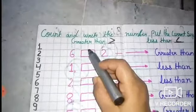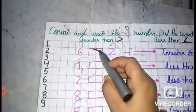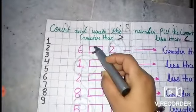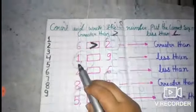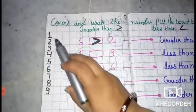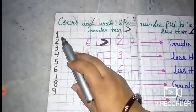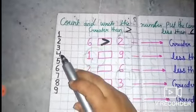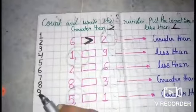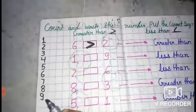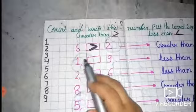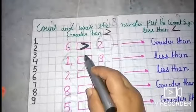Six is the greater number, so the sign is greater than. Next: one and nine. Let's count: one, two, three, four, five, six, seven, eight, nine — nine is the last number. Nine is more than one, so the sign is less than.